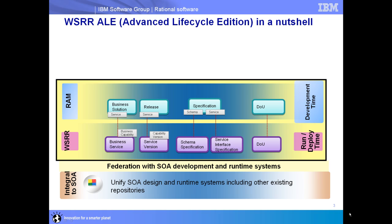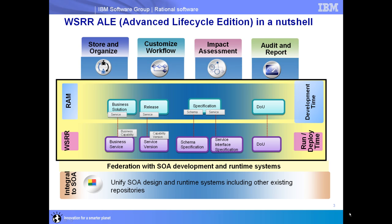A subset of those assets will be linked into the runtime part of WSRR, where we maintain and govern the runtime service — specifically the endpoints available at runtime. These linkages between objects in both tools are maintained and synchronized throughout the governance lifecycle, which is itself governed across both products. Capabilities include storage and organization of assets, customized governance workflow, impact assessment, and overall auditing and reporting.